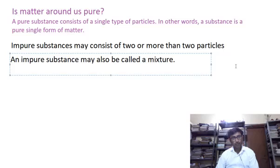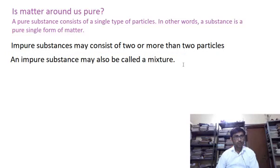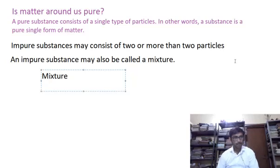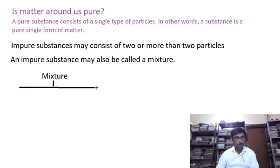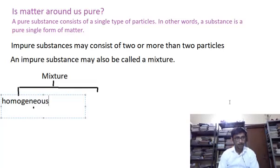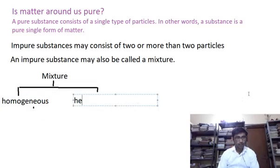So now, talking about mixtures, we have to understand whether there are any types involved in the discussion of mixtures. Yes, of course, there are two kinds of mixtures. Mixtures are of two kinds: one kind is called homogeneous and the other is called heterogeneous.